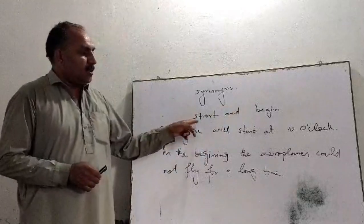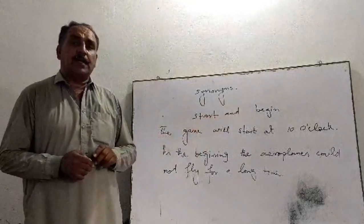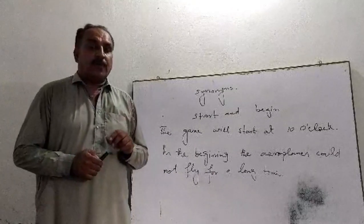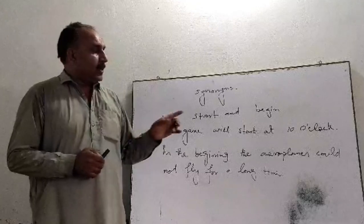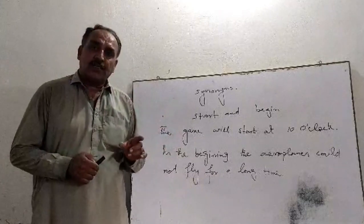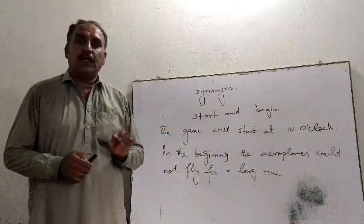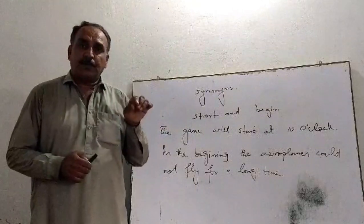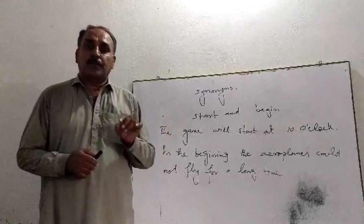When to use 'start' and when to use 'begin'? We use 'start' when we have a particular place or time. For example, the race started from Peshawar and it ended at Nowshera. It is a particular place where the race started and a particular place where it ended. So where there is a point of time and a proper place, there we use 'start.'